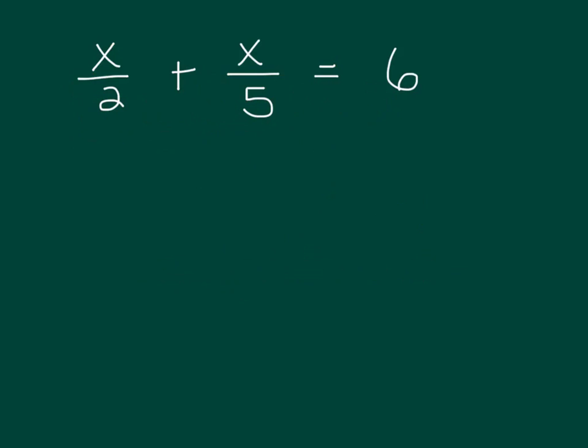If you want, you can put a 1 underneath the 6. So we're going to look at the denominators — I have a 2 and a 5 and a 1. I need to think of something that 2 and 5 both go into. Right away I think of, well, they both go into 10. So I'm going to end up multiplying every single thing by 10.